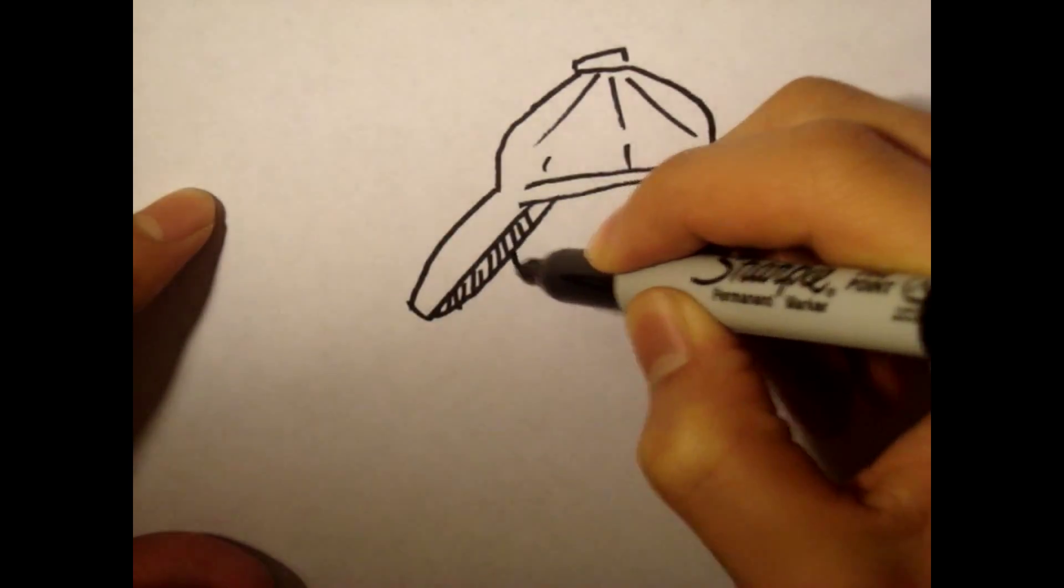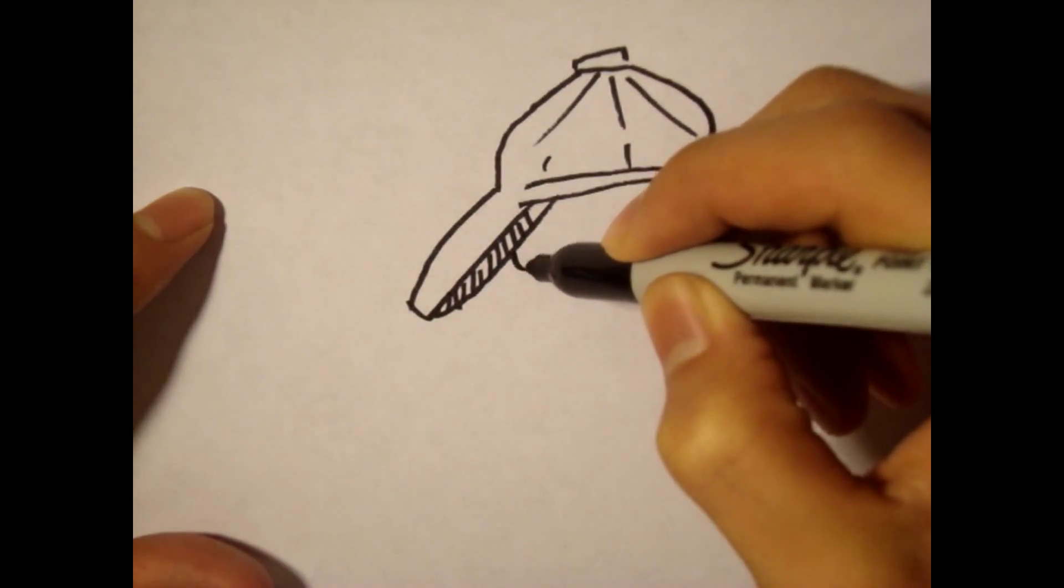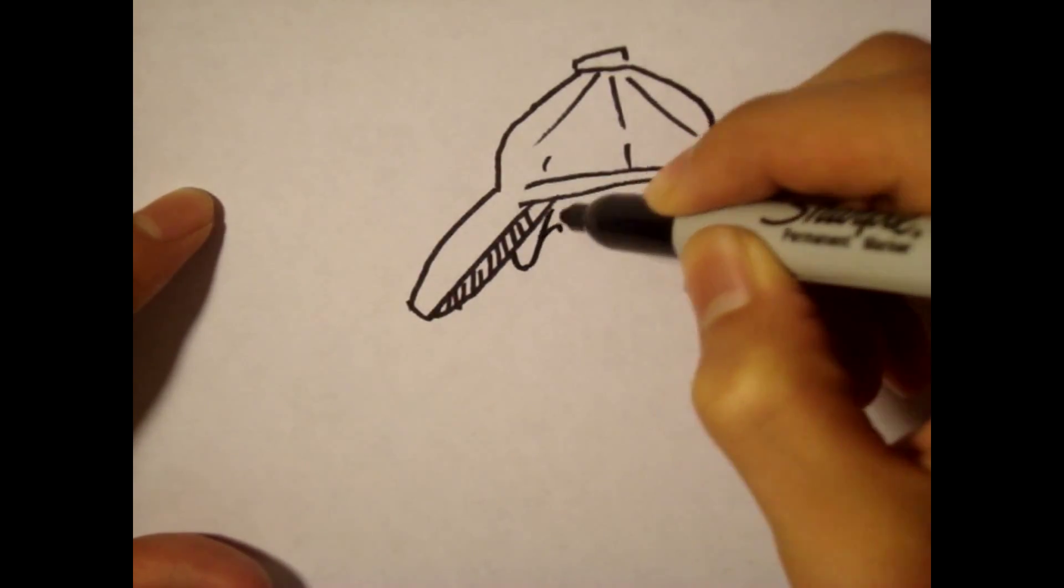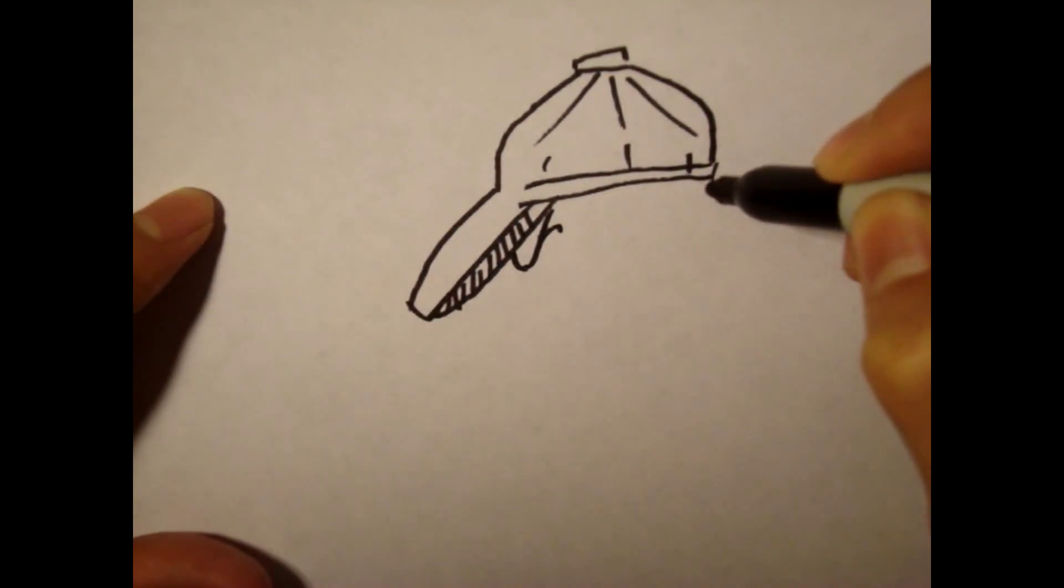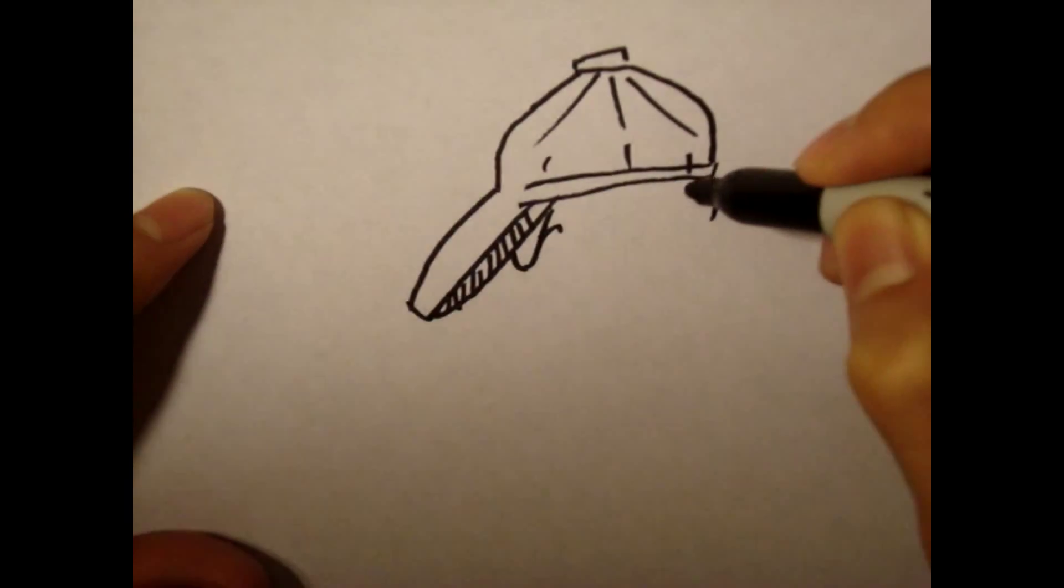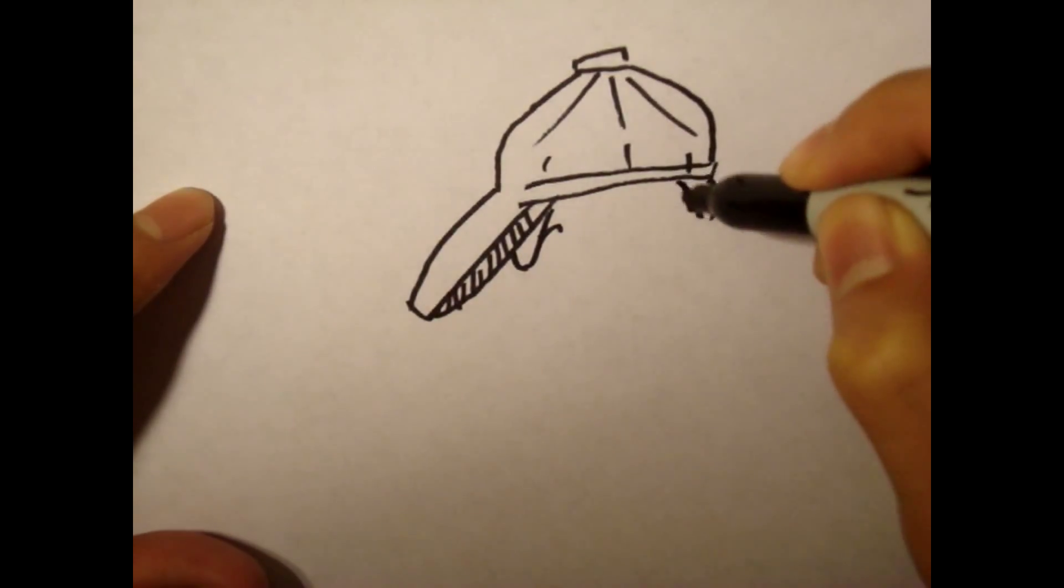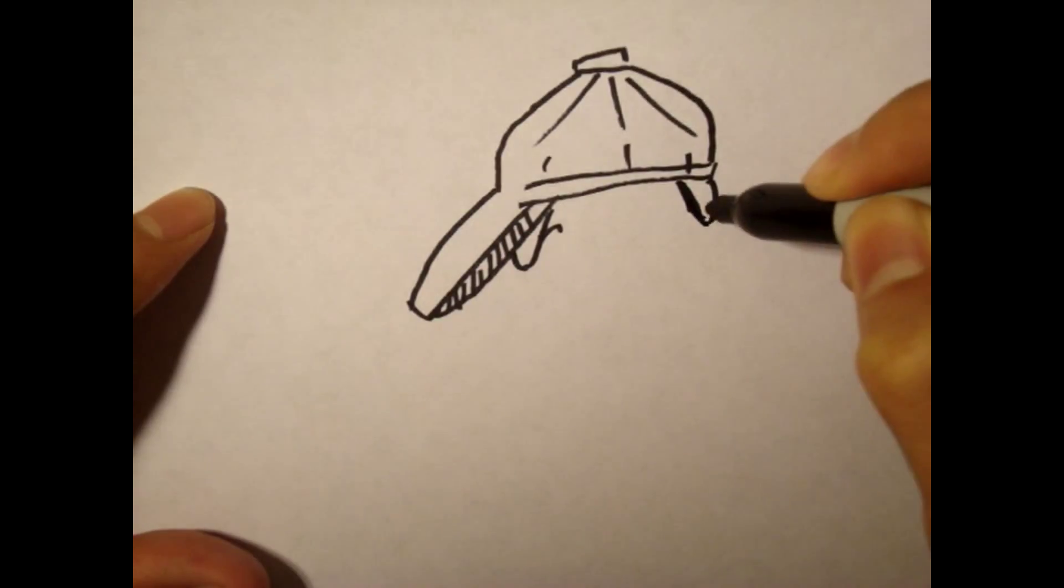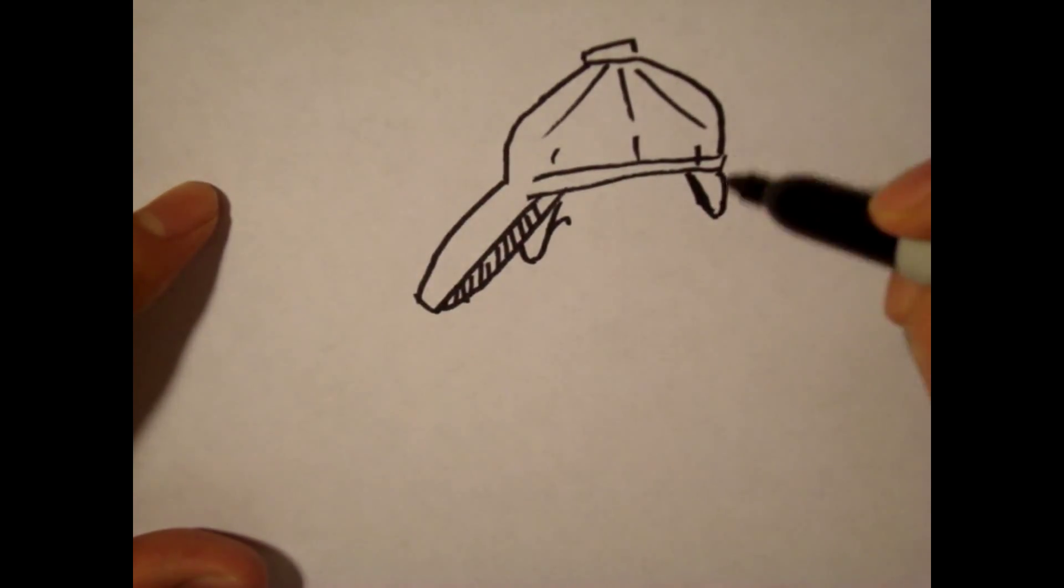We're going to draw the pig ear that's sticking out when he is wearing the hat. And we do the same thing on the other side that's sticking out. And then we're gonna draw his face.